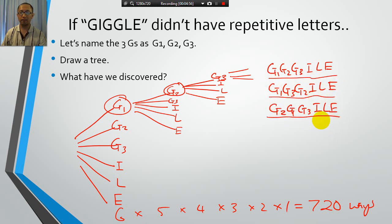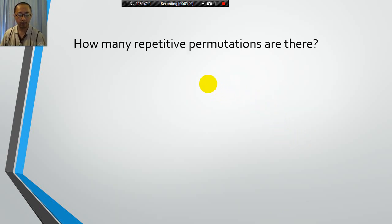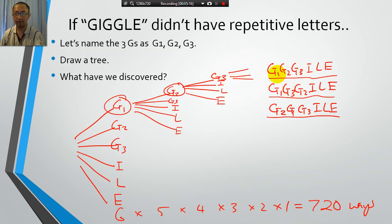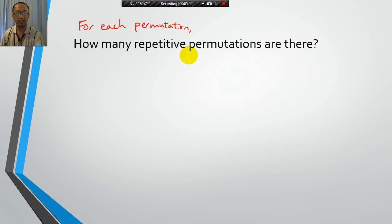So, because these are all the same, what we want to do now is we want to find out how many of these are there for each option. Right? For each permutation, so, like what we had before, three G's, I, L, E. G, G, G, I, L, E. How many repetitive permutations are there?